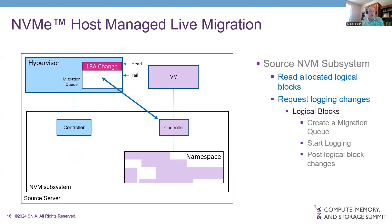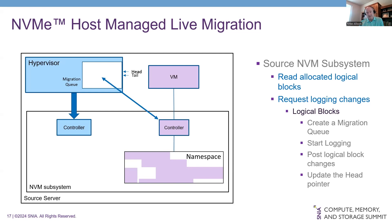For every change to the namespace, entries can be placed in the queue. Controllers can aggregate changes to minimize the number of entries — we're leaving some freedom in the implementation. The host can also send a command to indicate it has processed an entry. There's a new Set Features command that tells the controller to move the head pointer down because entries in the queue have been dealt with. This is very similar to the IO completion queue in terms of head and tail, posting and pulling items off the queue.